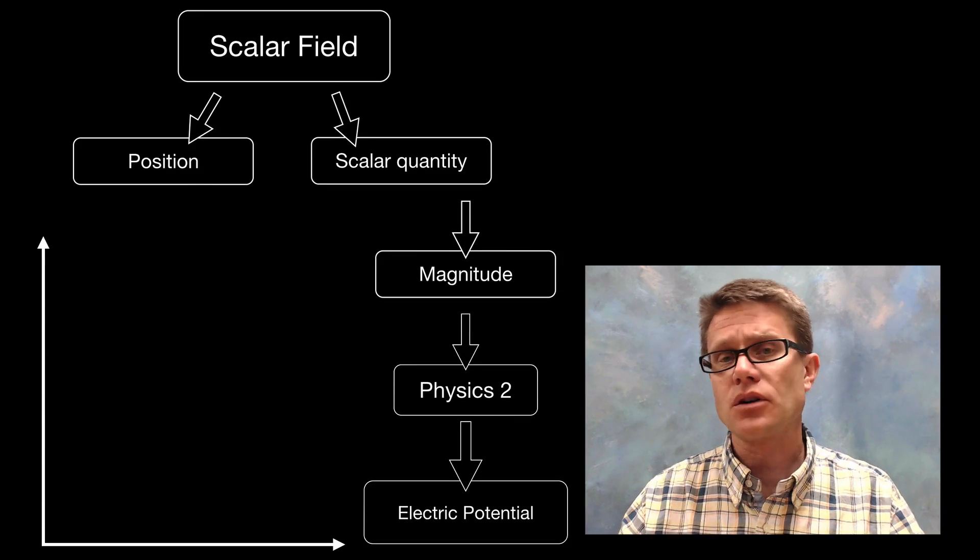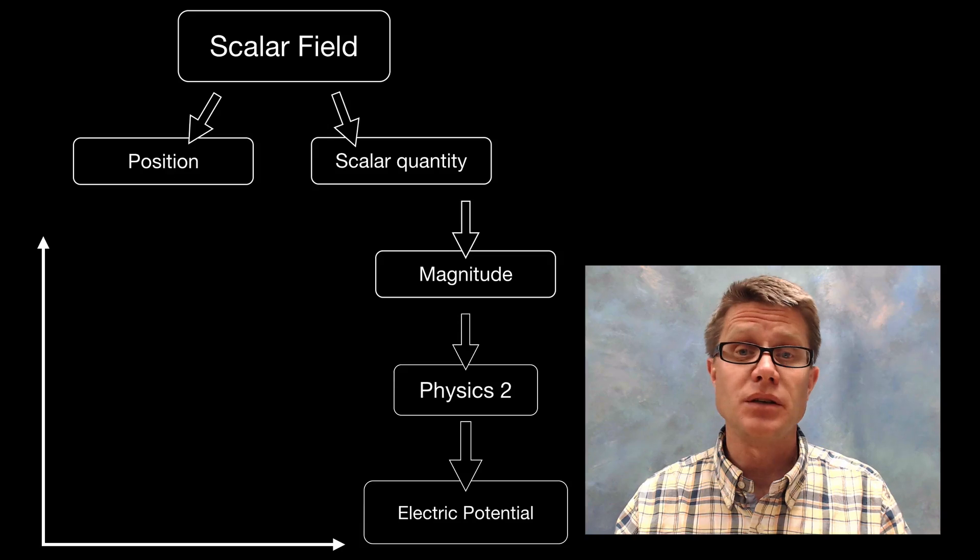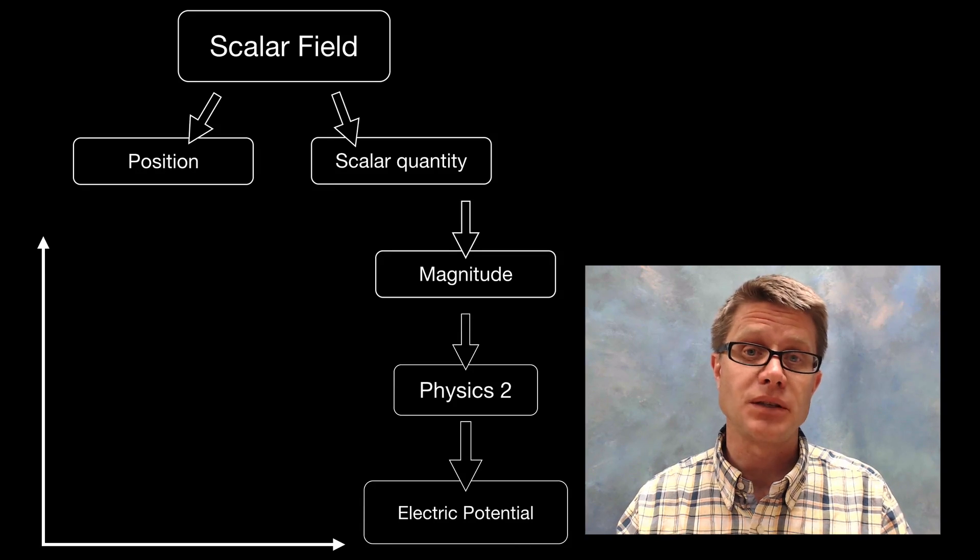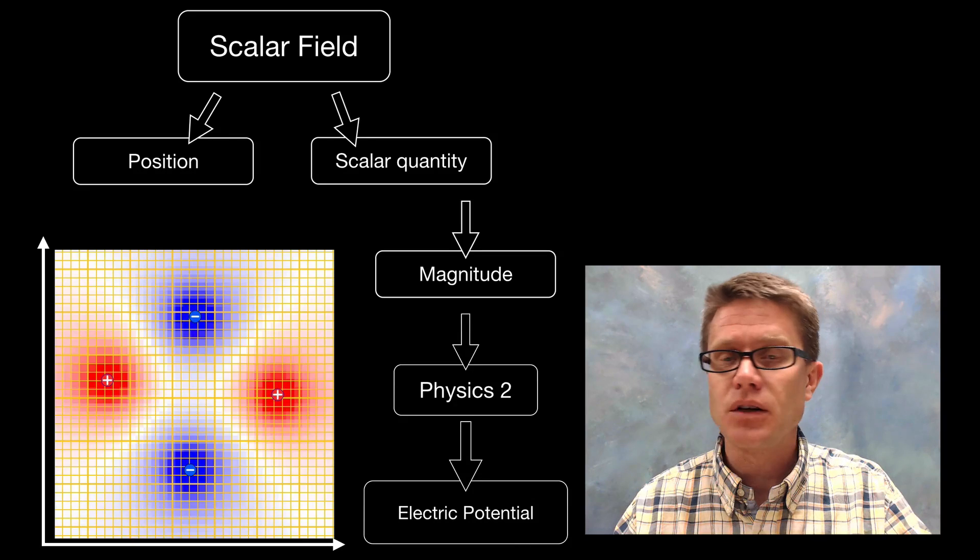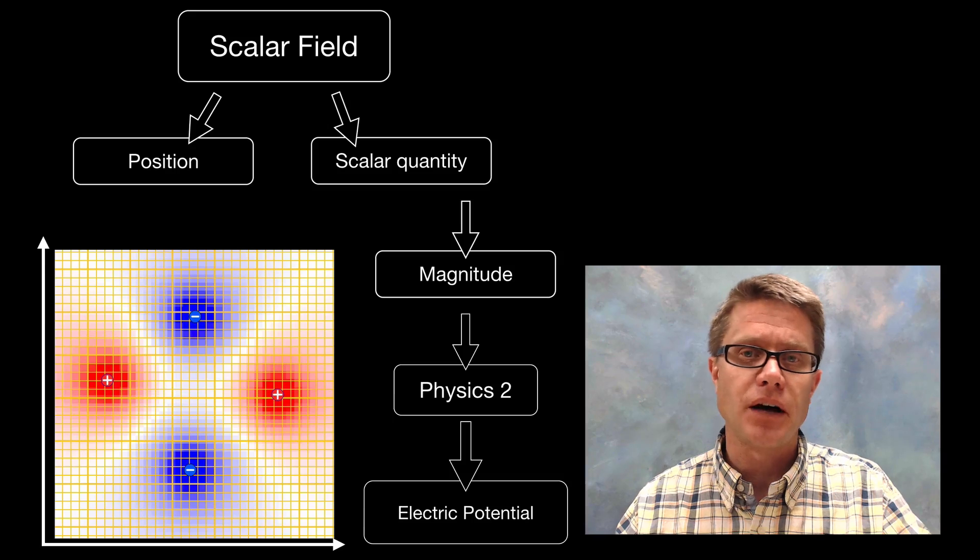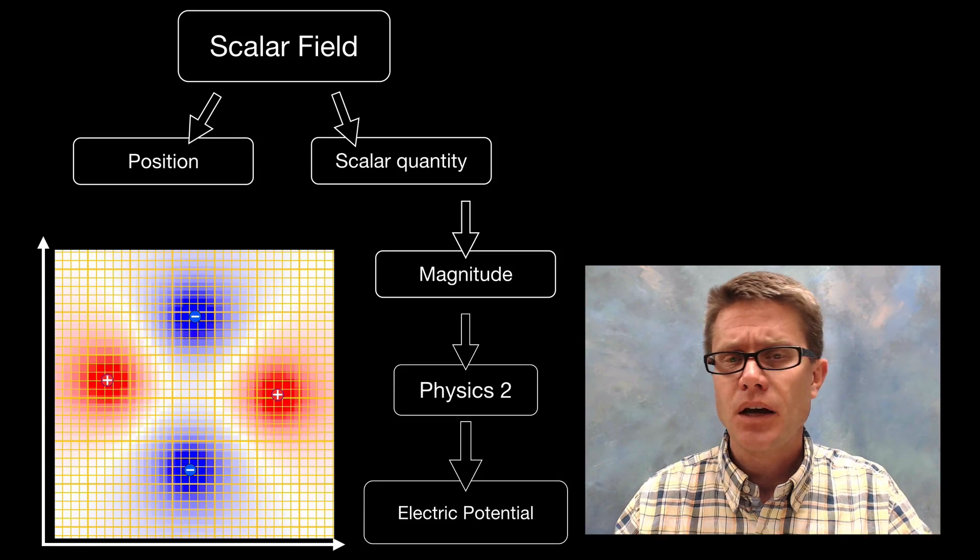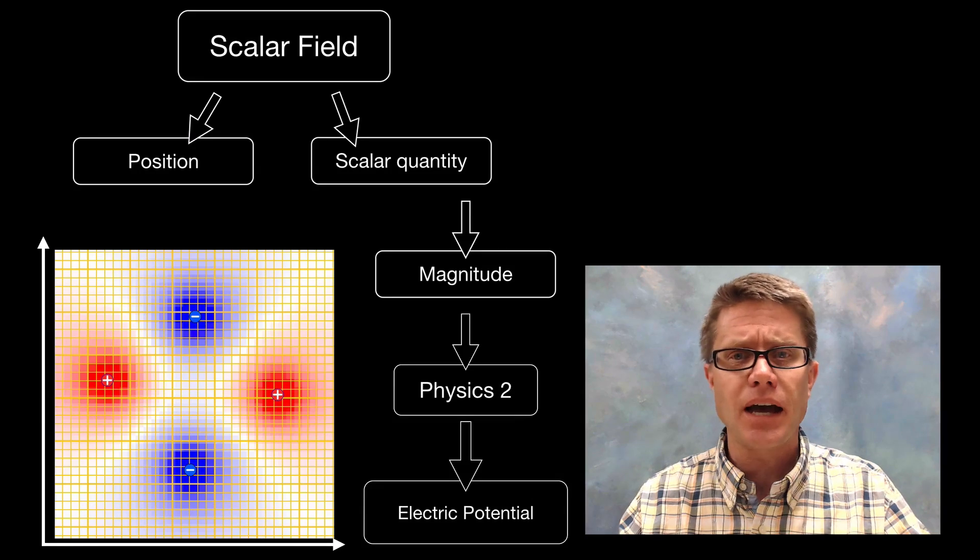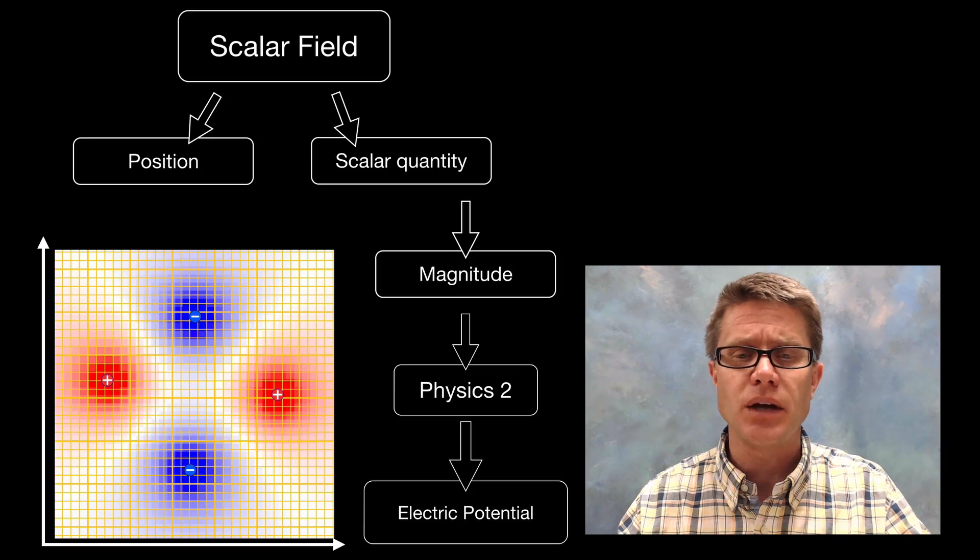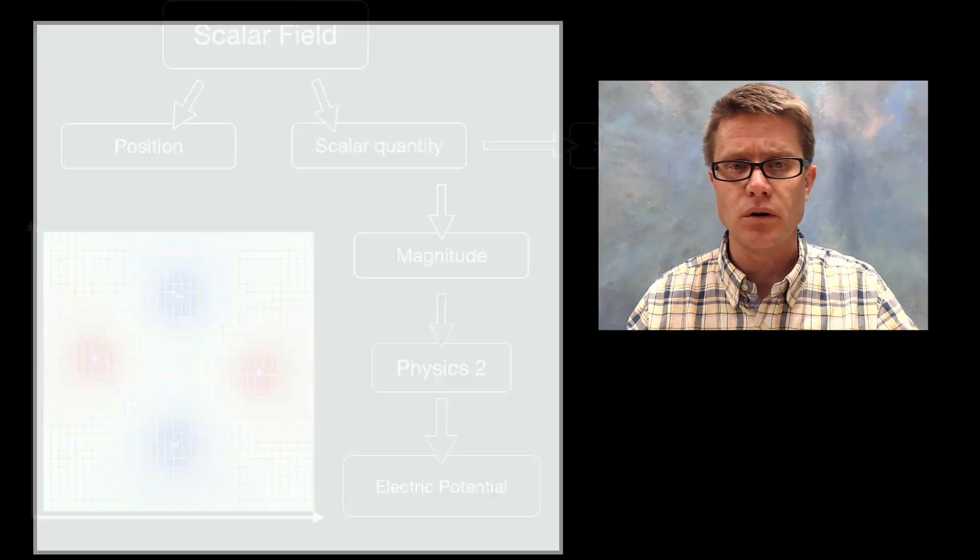And so in physics 2, the most important one would be dealing with a scalar field of electric potential. In other words if you're given charges you should be able to figure out the scalar fields of that area. And to do that, lots of times you'll have to add different scalar quantities. And so we have to understand how scalar addition works.